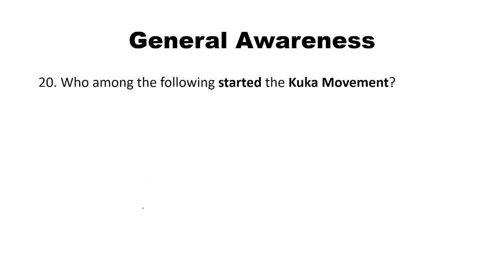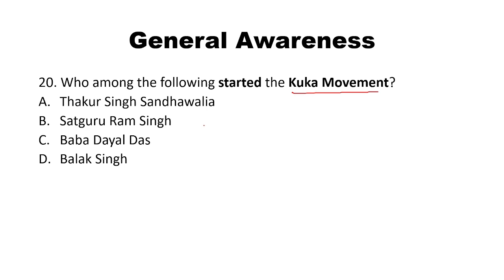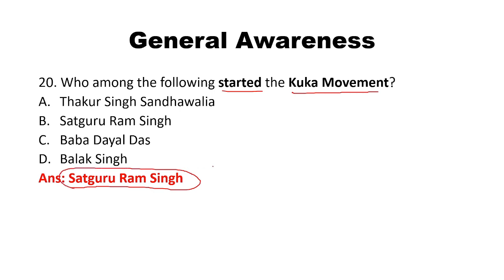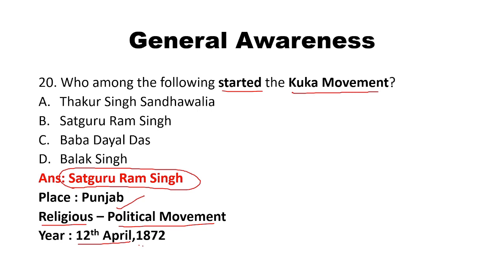Who among the following started the Kuka movement? Options: Thakur Singh Sandhwaliya, Sadhguru Ram Singh, Baba Dayal Das, Balak Singh. The answer is Sadhguru Ram Singh. Sadhguru Ram Singh started the Kuka movement in Punjab. It is a religious and political movement, started on 12th April 1872.